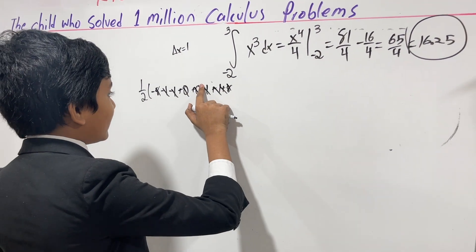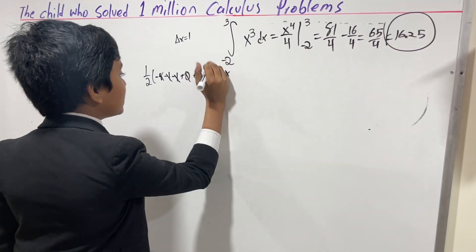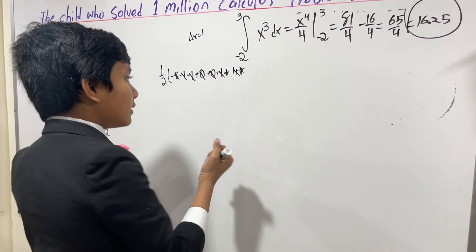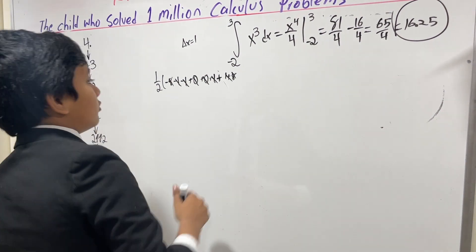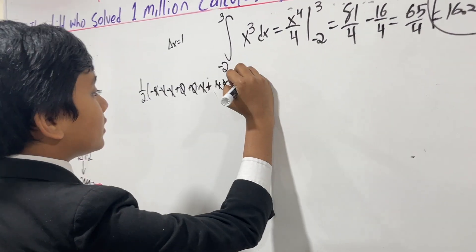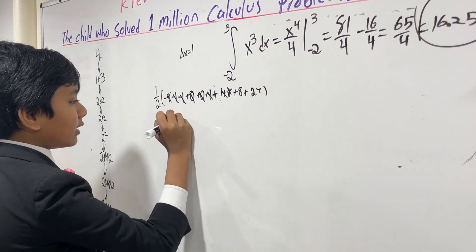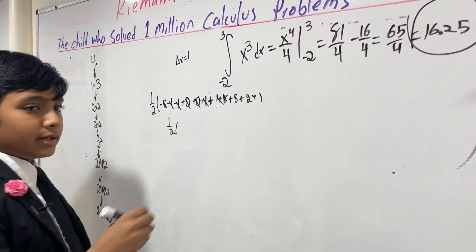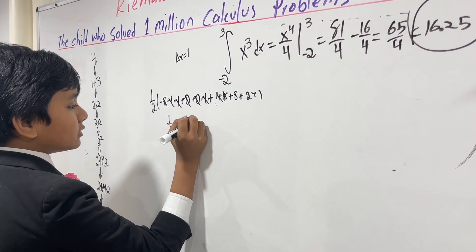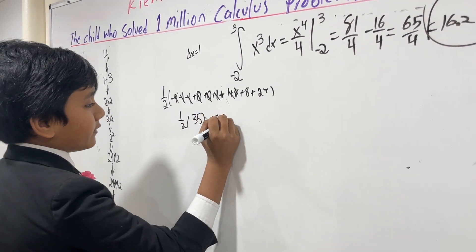And then we get plus 2 cubed plus 3 cubed. So we simply get one half times— 8 plus 27 is 35— which gives us 17.5. That's it. This is pretty darn close.